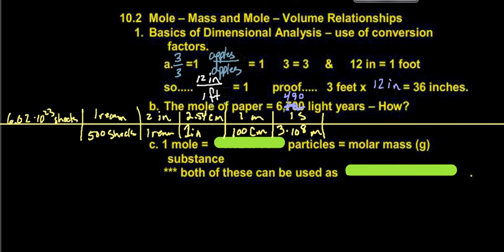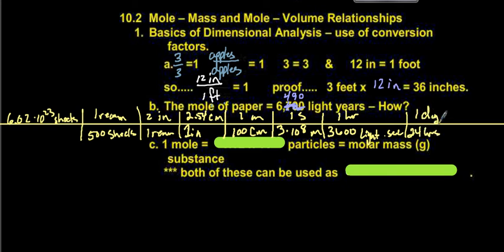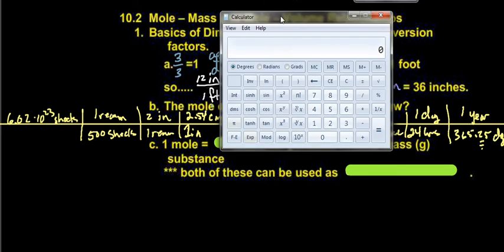We know that there are 3,600 light seconds in 1 light hour. And we know that there are 24 hours in 1 day. And there are 365.25 days in 1 year. And if you're worried about that .25 part — that's where we're going to throw out our calculator and see what all this equals.